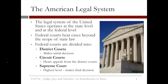The legal system of the United States operates at the state level and at the federal, or countrywide, level. The federal level is necessary to deal with cases beyond the scope of state law, like disputes between states and violations of federal laws. The federal court is divided into three levels: district courts, circuit courts, and the Supreme Court.